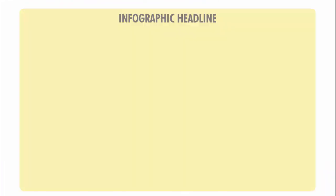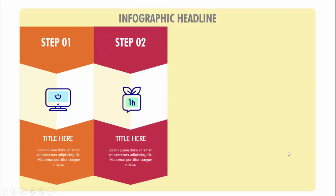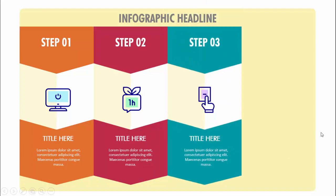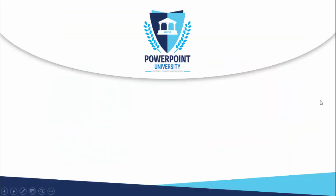In today's tutorial I'm going to show you how to create a four-option infographic in PowerPoint. When I click it will show you step one, where you can add the icon, the title, and the detail text. When I click it will show you the second color combination, step two, then step three and step four. Depending on your requirement you can increase or decrease these options.